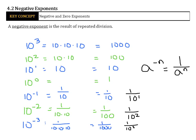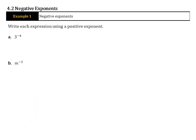Now we're going to take that information and apply it to some examples. In our first set, we want to write each expression using a positive exponent. For 3 to the negative 4th, all we need to do is write it as 1 over 3 to the 4th power — and that's it. We don't need to simplify. So m to the negative 2 is simply 1 over m to the 2nd power.